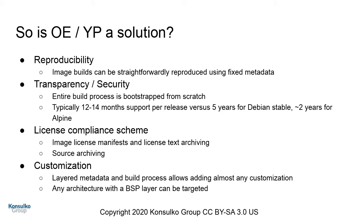OE gives you reproducibility and you're in control of everything — you're bootstrapping your builds. The support story is where cloud stuff might not be as important as a pure embedded system. Right now the LTS story is starting to come together for OpenEmbedded, but at the moment you're still on about 12 to 14 months and then you have to be prepared to do upgrades or maintenance. We do have tooling for license manifests, source archiving, and you can support hardware architectures like MIPS that other distros might not support.